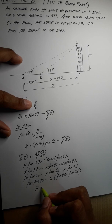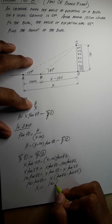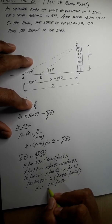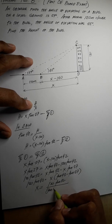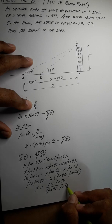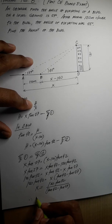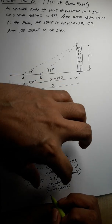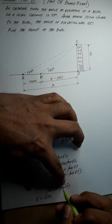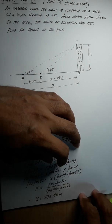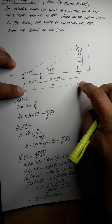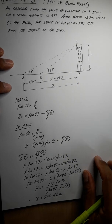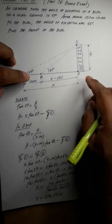Solving for x: x equals 120 tangent 42 over (tangent 42 minus tangent 27). Therefore, x equals 276.42 meters. This is the distance x from the initial observer position to the base of the building.